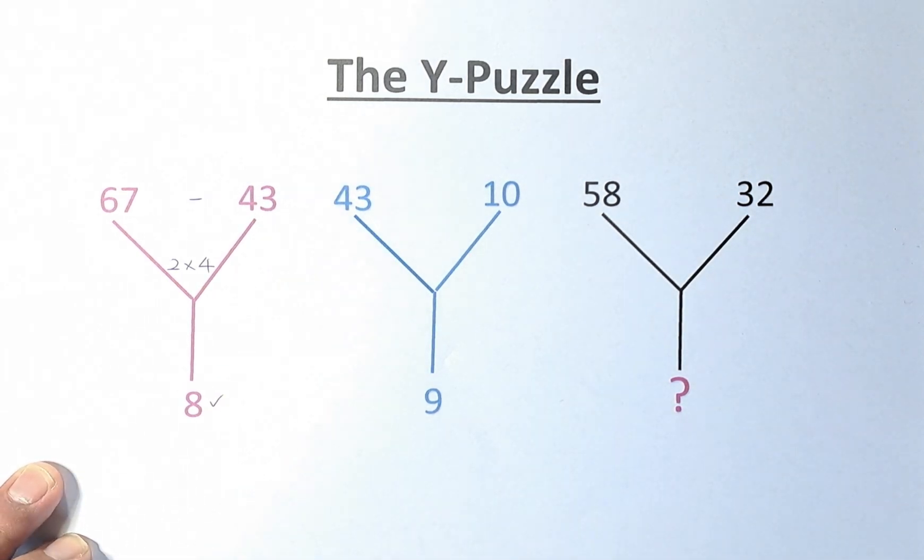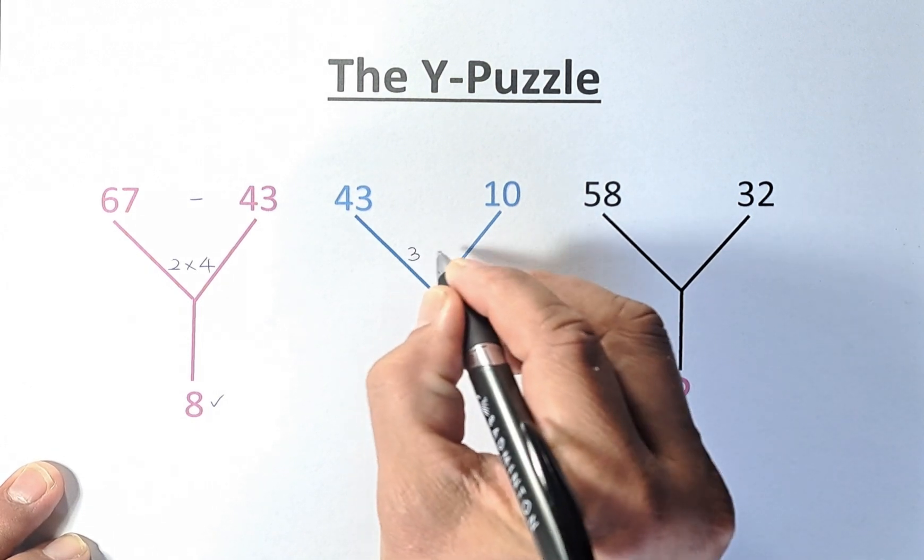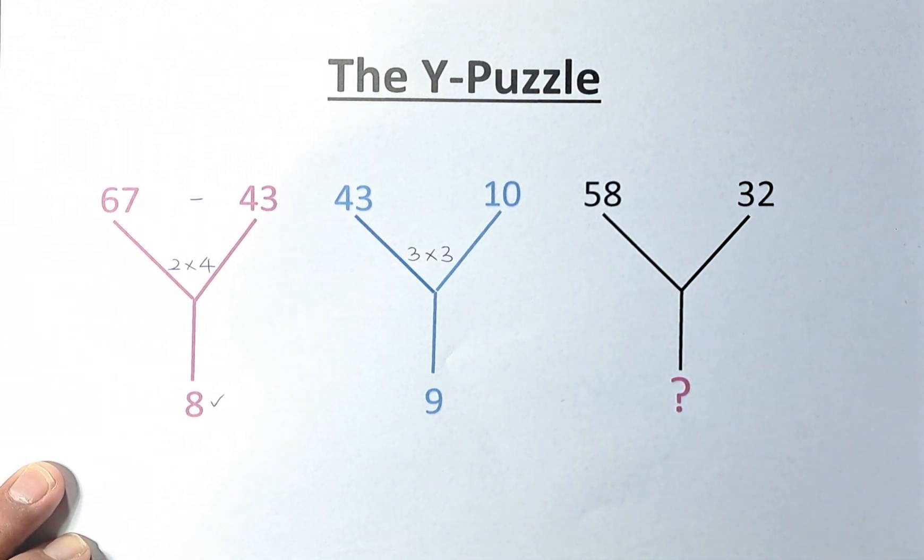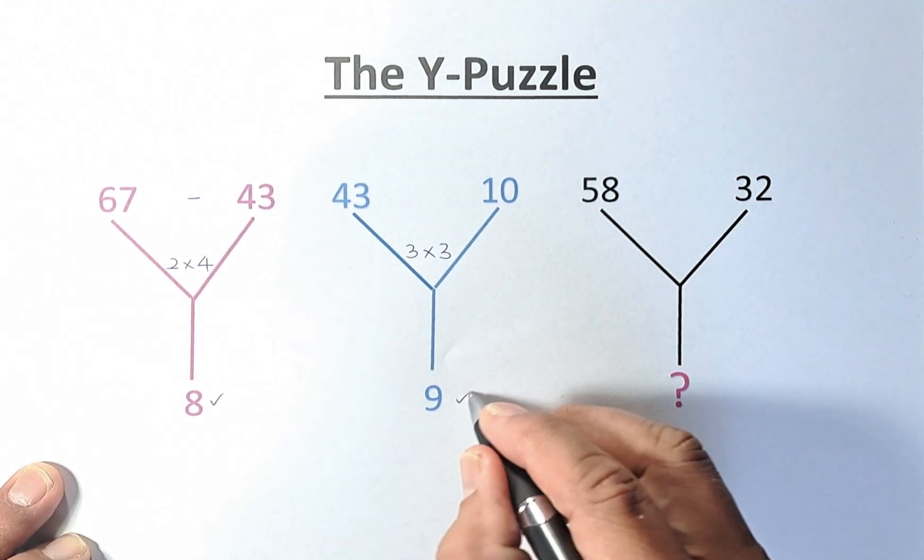Now we're going to do the second Y. 43 minus 10 is going to be 33. So 3, 3, and then you are going to multiply 3 by 3, and the answer is 9.